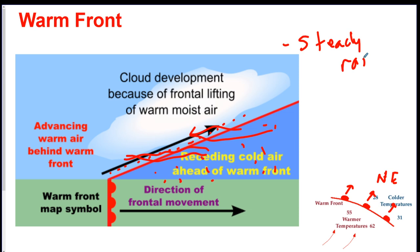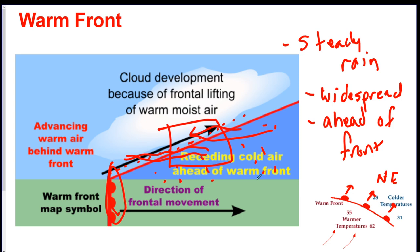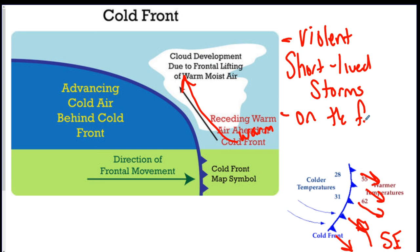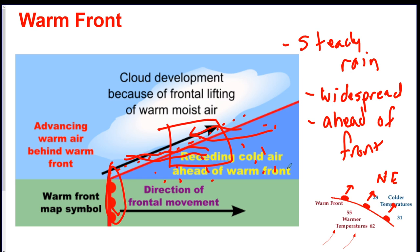The rain is widespread meaning it takes up a large area and it occurs ahead of the front. See the front's here but you get all your clouds over here. Right? So on the cold front you could see this happens on the front. You could see the cloud is like on like over the front as opposed to here the clouds are ahead of the front. So steady rain widespread ahead of the front.